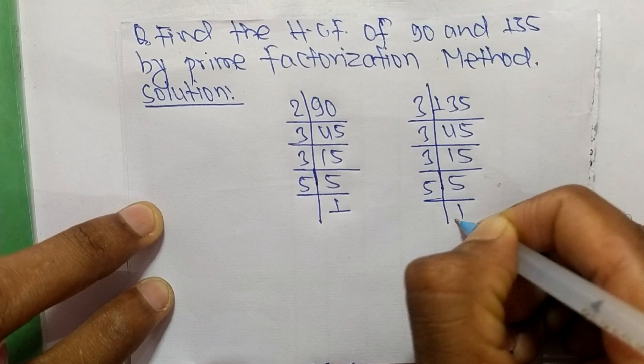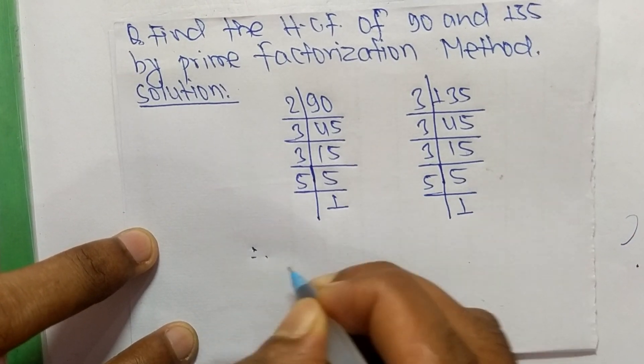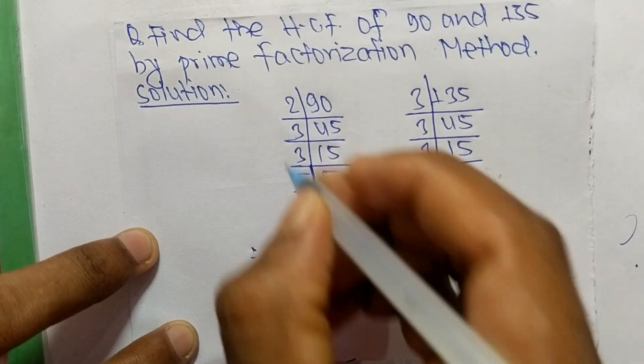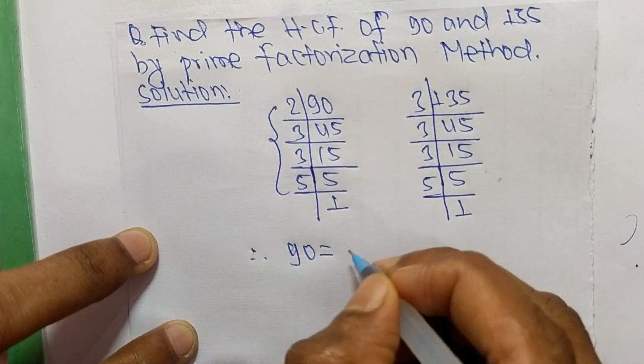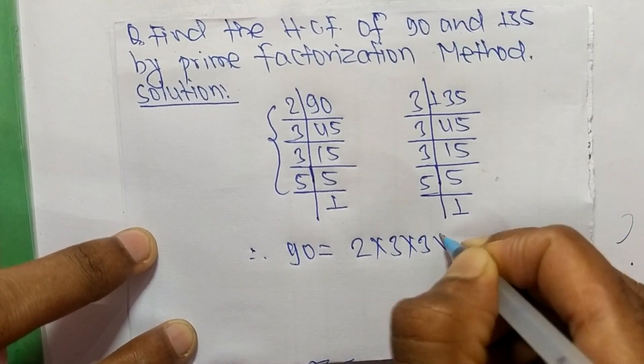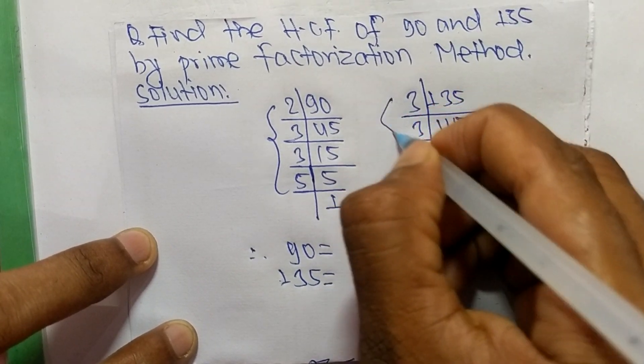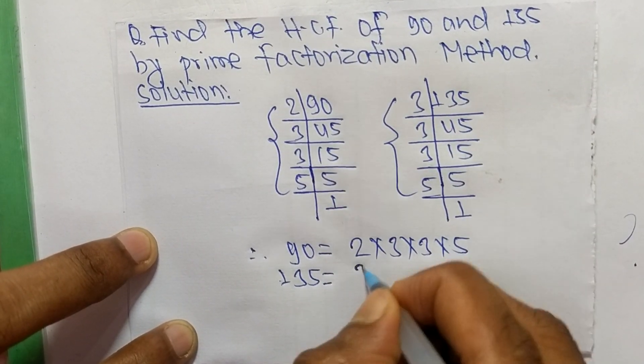So from these prime factors we can write 90 is equal to 2 times 3 times 3 times 5, and 135 is equal to 3 times 3 times 3 times 5.